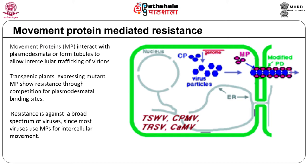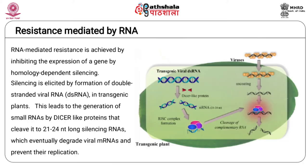These proteins either interact with plasmodesmata or form tubules to allow intercellular trafficking of virions or ribonucleoprotein complexes. In addition, movement proteins also have a DNA/RNA binding domain, and the transgenic mutated movement proteins interfere with the native movement protein-mediated plasmodesmatal trafficking of viral DNA or RNA. An advantage of this strategy is that it offers broad spectrum resistance to diverse plant viruses that are dependent on the same type of plasmodesmata components for the establishment of infection.